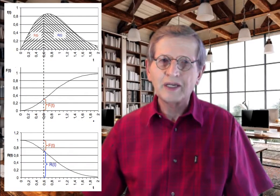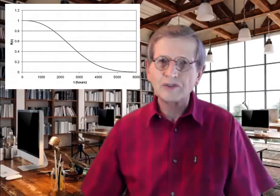The survival function R(t) is defined as the probability that failure will take place after time t — in other words, the probability that the time of failure t* will fall within the interval t to infinity. The survival or reliability function is the complement of the failure distribution function, giving the probability of survival up to any specific time t. The corresponding graph is again repeated here for reference.